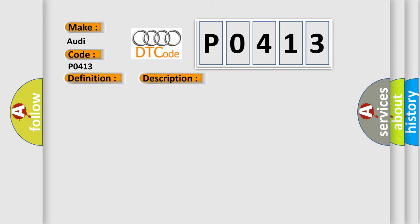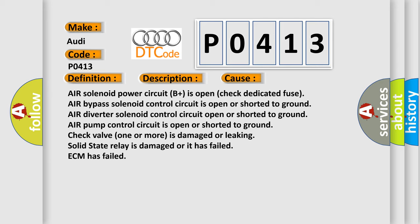This diagnostic error occurs most often in these cases: air solenoid power circuit B+ is open — check the dedicated fuse; air bypass solenoid control circuit is open or shorted to ground; air diverter solenoid control circuit open or shorted to ground; air pump control circuit is open or shorted to ground; check valve — one or more is damaged or leaking; solid state relay is damaged or has failed; ECM has failed.